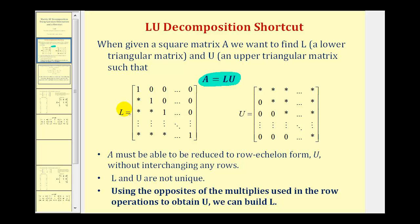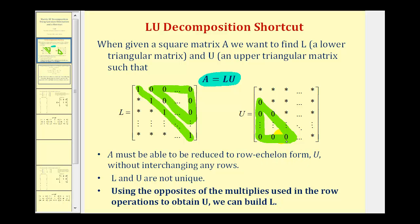For the shortcut method, our lower triangular matrix L will have a main diagonal consisting of ones, and all elements above the main diagonal must be zero. For the upper triangular matrix, all the elements below the main diagonal must be zero, and the main diagonal does not have to consist of ones. In order for this decomposition to be possible, matrix A must be reducible to row echelon form — which would be matrix U — without interchanging any rows. Also, matrix L and matrix U are not unique. Because we're using the shortcut method, we're going to use the opposites of the multipliers used in the row operations to obtain U to build matrix L.